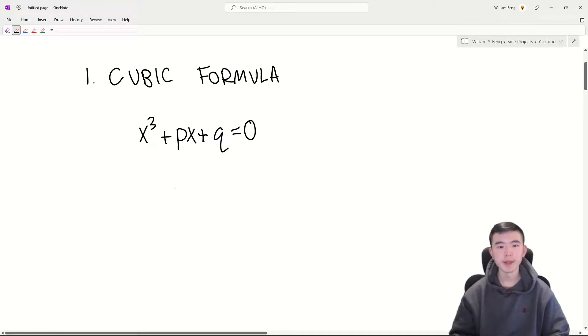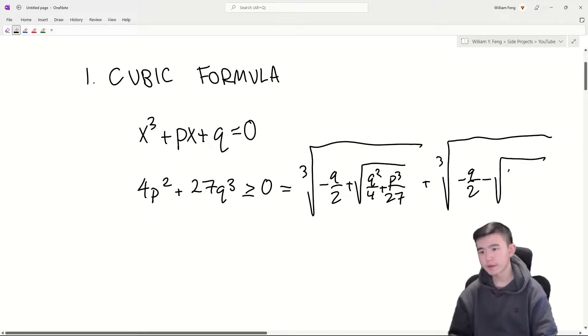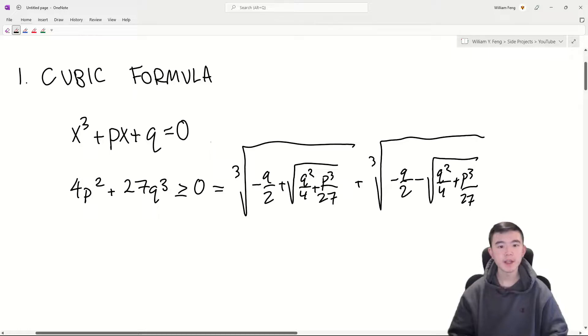This is also known as Cardano's formula. The formula tells us that if p and q are real numbers and 4p cubed plus 27q squared is greater than or equal to 0, then the real root equals cube root of negative q over 2 plus square root of q squared over 4 plus p cubed over 27 plus the cube root of negative q over 2 minus square root of q squared over 4 plus p cubed over 27. Now, this might look kind of ugly, but it works out if you know that the roots of the cubic are nice numbers. Furthermore, we can reduce any cubic to this form just by doing some variable substitutions to get rid of the quadratic term.